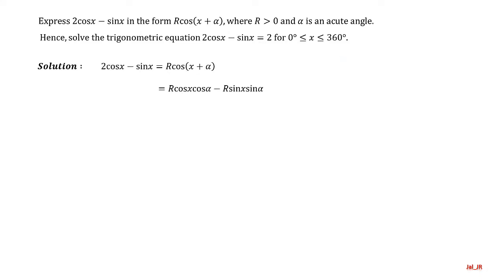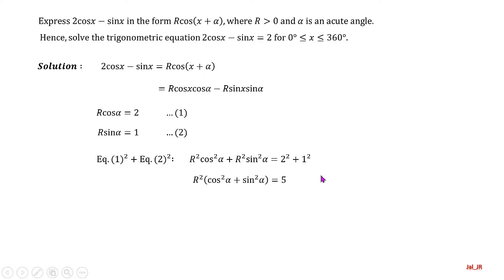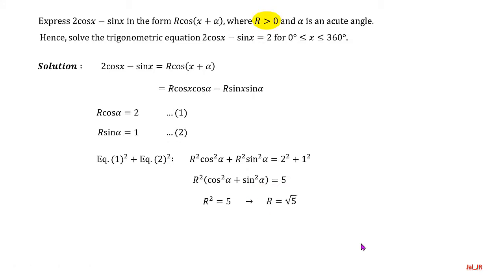First step: use the compound angle formula to expand the right side of the equation. Second step: compare the coefficient of cosine(x) to get equation one, and compare the coefficient of sine(x) to get equation two. Third step: solve for r — square both sides of the equations and add them together. Factor out r squared and use the trigonometric identity to simplify the expression inside the brackets.